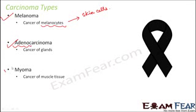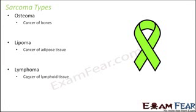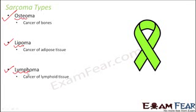Myoma is cancer of the muscle tissue and is given a separate name. Moving on to types of sarcoma: osteoma, lipoma, and lymphoma. Osteoma — 'osteo' refers to bones, so cancer of bones is osteoma. Lipoma is derived from 'lipids,' which relates to fats and adipose tissue, so cancer of adipose tissue is lipoma. Lymphoma is derived from 'lymph,' so cancer of lymphoid tissue is lymphoma. It is important to know these terminologies as exam questions may ask which part of the body each cancer affects.